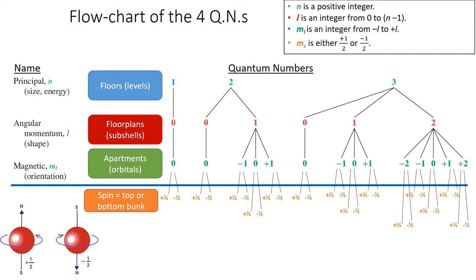Likewise, as angular momentum increases, we unlock additional orientations that the apartment can have, represented by the m sub l magnetic quantum number in green. However, each apartment can only fit two electrons, one which is spin up and one which is spin down.